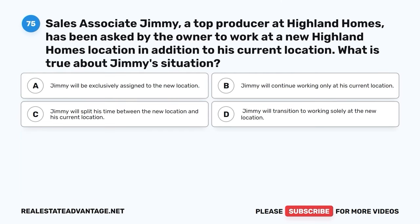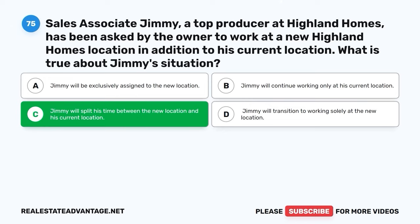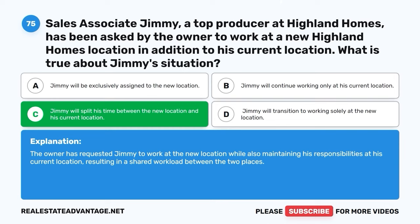Question 75. Sales associate Jimmy, a top producer at Highland Homes, has been asked by the owner to work at a new Highland Homes location in addition to his current location. What is true about Jimmy's situation? A. Jimmy will be exclusively assigned to the new location. B. Jimmy will continue working only at his current location. C. Jimmy will split his time between the new location and his current location. D. Jimmy will transition to working solely at the new location. The correct answer is C: Jimmy will split his time between the new location and his current location. The owner has requested Jimmy to work at the new location while also maintaining his responsibilities at his current location.